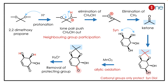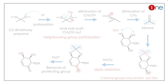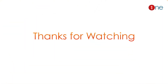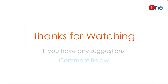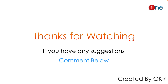Then you are removing the protecting group with acid, and finally you have the alcohol product. The key concept to learn here: manganese dioxide promotes allylic oxidation. That's all from this video. Thanks for watching — if you have any suggestions, comment below.